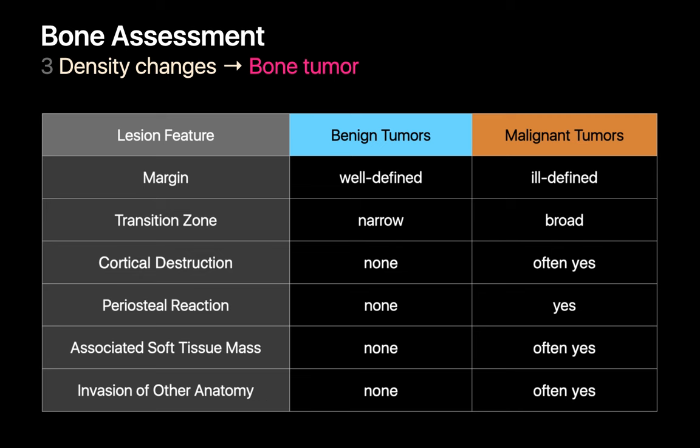Also notice the subtle cortical destruction near the tip of the blue arrow and the pathologic fracture near the tip of the red arrow. With malignant bone tumors, metastatic disease to bone is much more common than malignant primary bone tumors. Lymphoma and prostate cancer metastases to bone are generally sclerotic, while melanoma and renal cell carcinoma metastases to bone tend to be lytic. Lung, breast, and thyroid cancer metastases to bone often may be both.